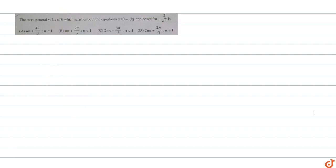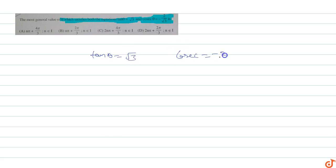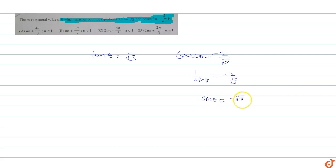In this question, we need to find the most general value of theta which satisfies both equations: tan theta equals root 3 and cosec theta equals minus 2 upon root 3. Converting cosec theta: 1 upon sin theta equals minus 2 upon root 3, so sin theta equals minus root 3 upon 2.